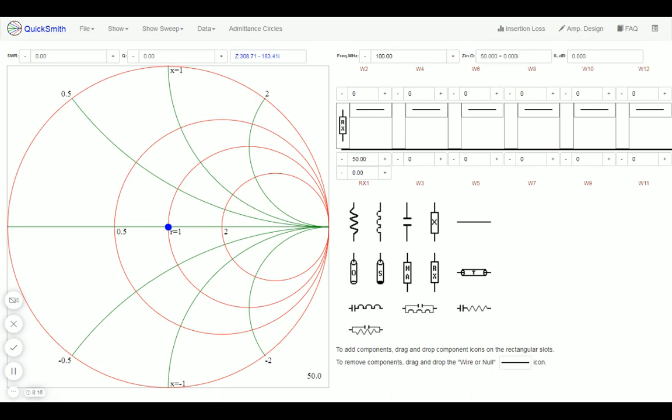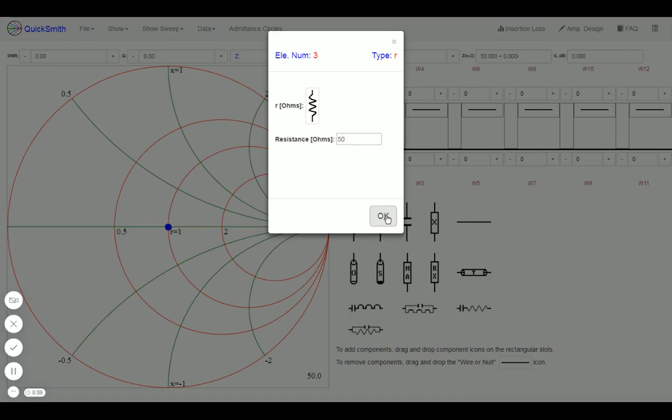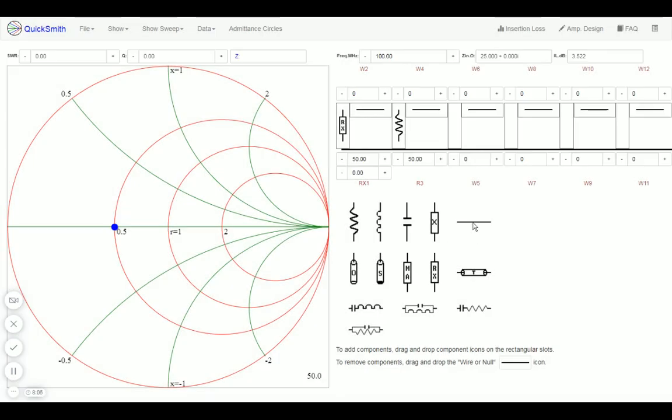To add a component, you have to drag and drop it to the ladder network, like this. To remove, simply drag and drop the wire or the null component on top of it.